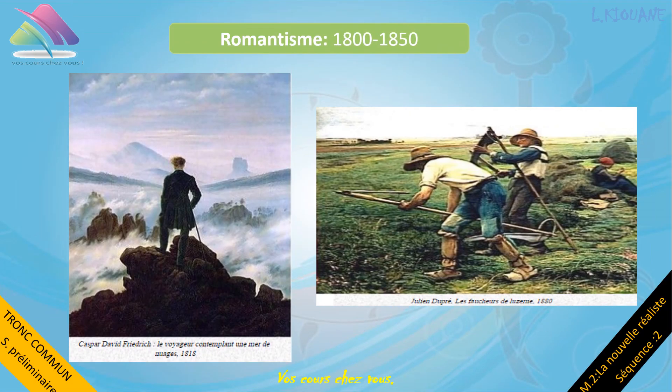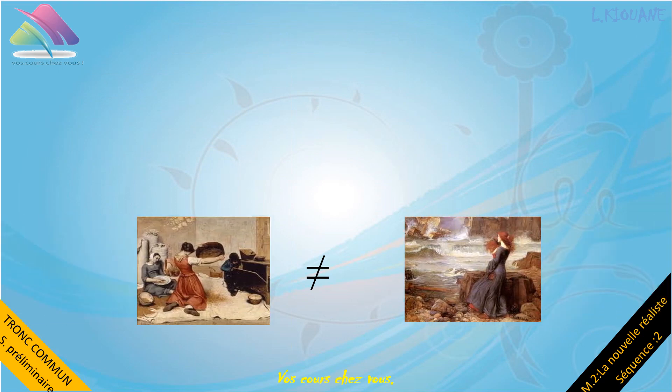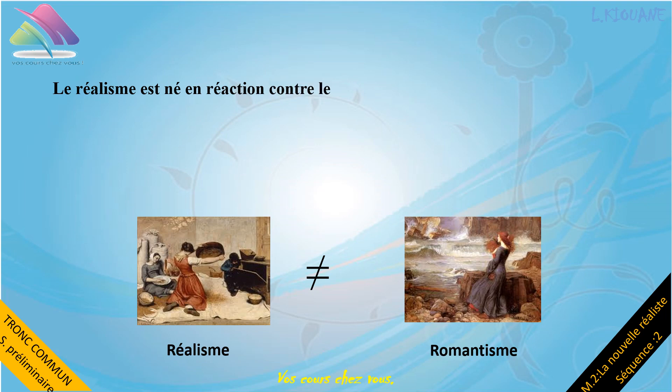Comparons ces deux tableaux : il est clair qu'il s'agit du même thème, l'homme et la nature. Dans le premier tableau, il s'agit d'un voyageur contemplant une mer de nuages, ce qui est très loin de la réalité. Tandis que dans le deuxième tableau, Julien Dupré peint la réalité telle qu'elle est, il ne cherche pas à l'enjoliver, à la rendre jolie. Alors, le réalisme qui nous intéresse est né en réaction contre ce courant, le romantisme.